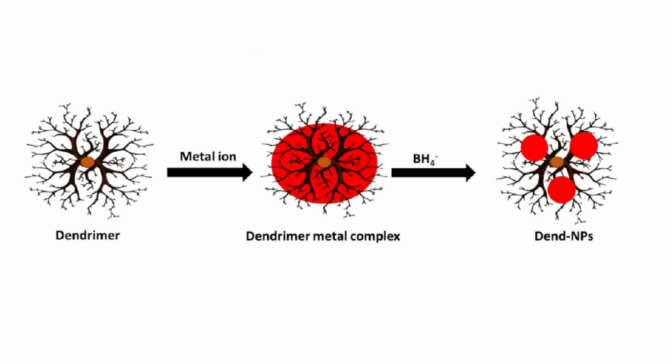1. PAMAM dendrimer with terminal functional groups forms a complex with the metal ions through the reaction of lone pair of electrons present at the tertiary amines in internal cavities. 2. The metal ions are reduced to their zero-valent states using sodium borohydride, a strong reducing agent, to form nanoparticles within the dendrimer.